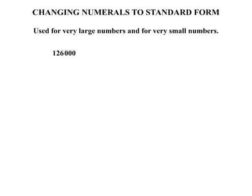Now in this lesson we're looking at changing numerals to standard form. Standard form is used for very large numbers and for very small numbers. For example, this large number 126,000 in standard form will be written as 1.26×10^5, and a very small number like this one can be rewritten as 5×10^-6.